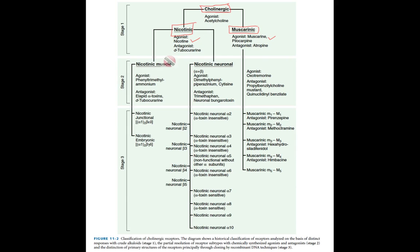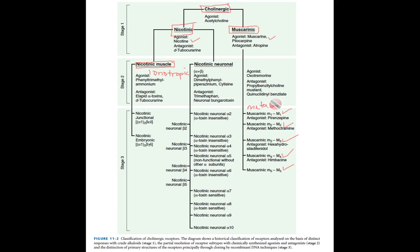Nicotinic receptors are found on muscle cells, so at the neuromuscular junction the cholinergic receptors on the postsynaptic cell will be nicotinic receptors. For the muscarinic receptors, there are five subtypes: M1, M2, M3, M4, and M5. Nicotinic receptors are described as ionotropic, and muscarinic receptors are described as metabotropic — we'll discuss this in more detail in subsequent slides.